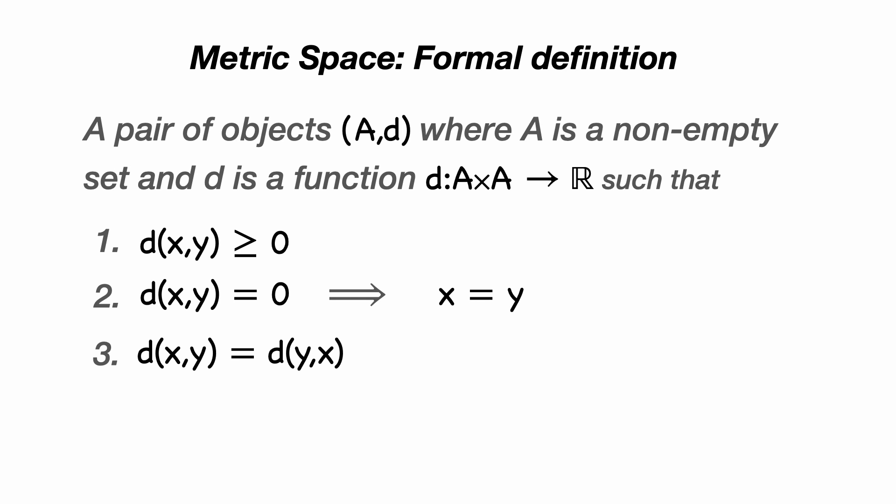d(x,y) equals d(y,x), which means that the distance is independent of direction. And finally, d(x,z) is always less than or equal to d(x,y) plus d(y,z), which we now know to be the triangle inequality.